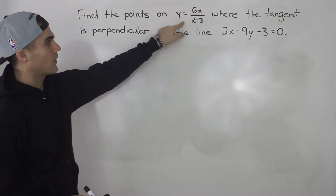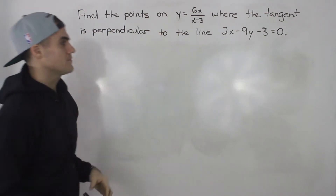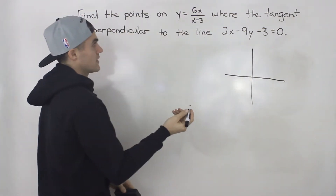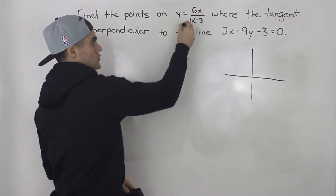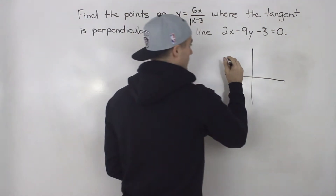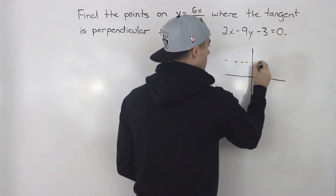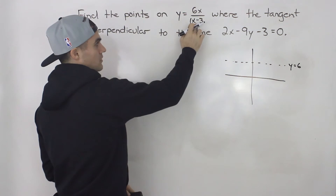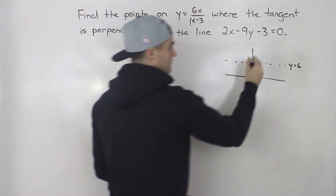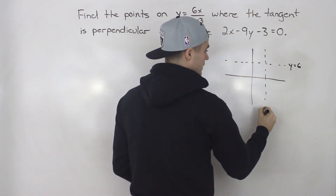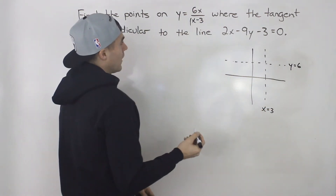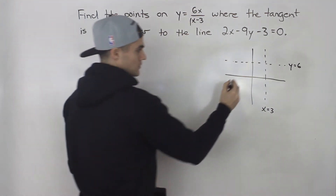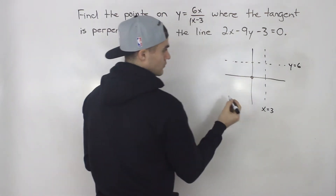This function here we can graph — it's a linear over a linear. From advanced functions, the first step is to find the horizontal asymptote, which is the ratio of the leading coefficients: 6 over 1, giving a y-value of 6. There's a vertical asymptote at x equals 3. To find the y-intercept, plug in 0 for x: 0 over negative 3, which is 0, so the function passes through the origin.